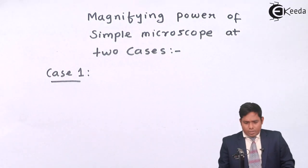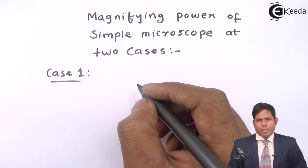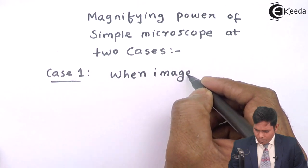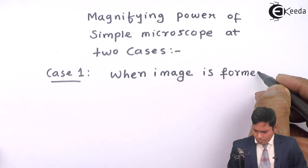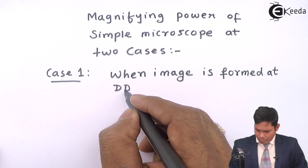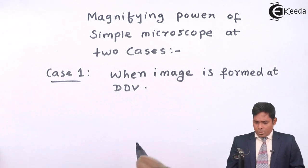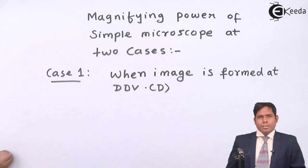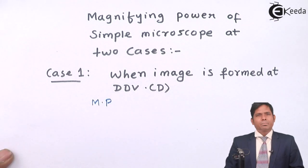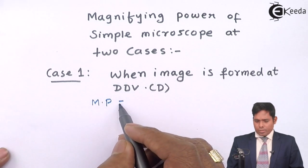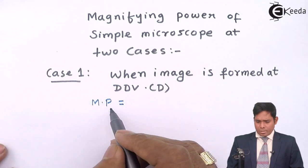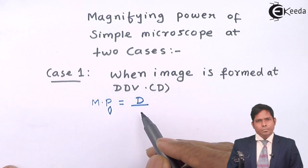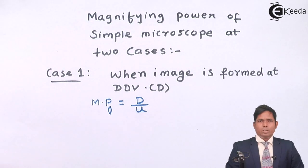Case number one: the image is formed at the distance of distinct vision, which in short we write as capital D. Now we know that the magnifying power of a simple microscope — a simple microscope is a single convex lens — the magnifying power is D divided by u, where u is the object distance.